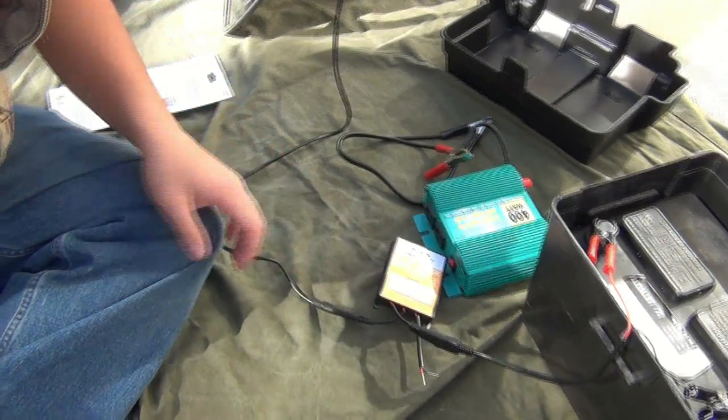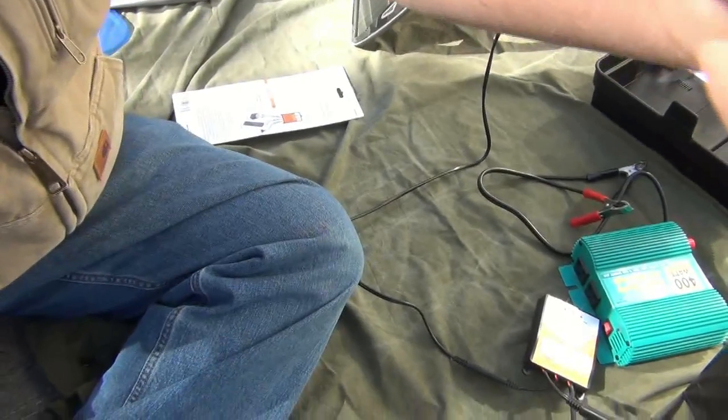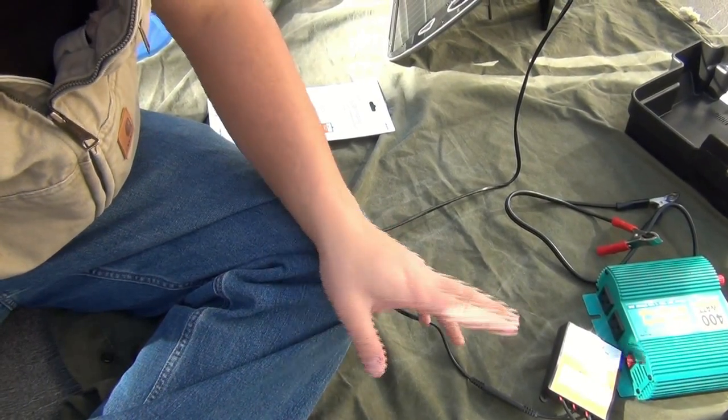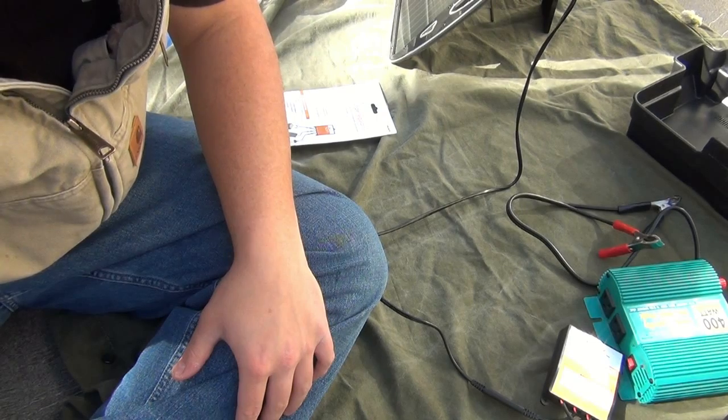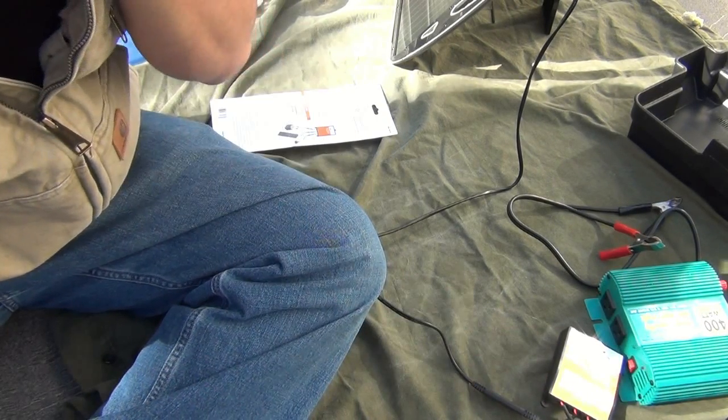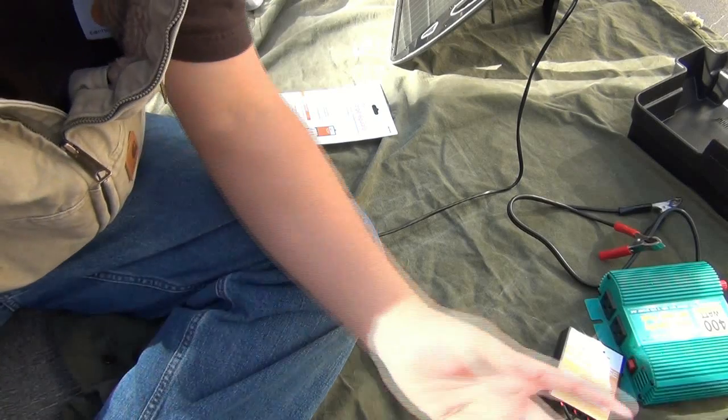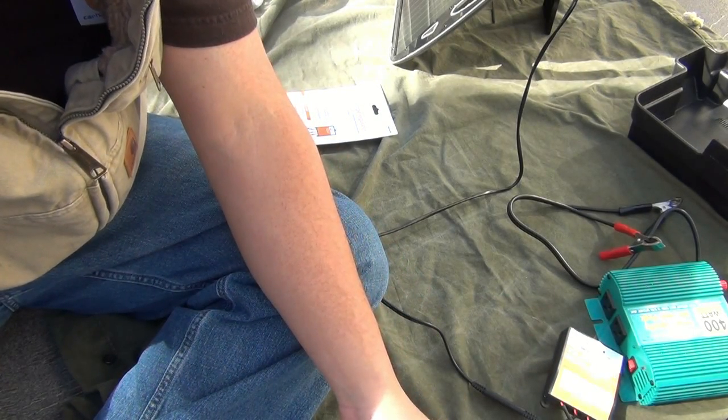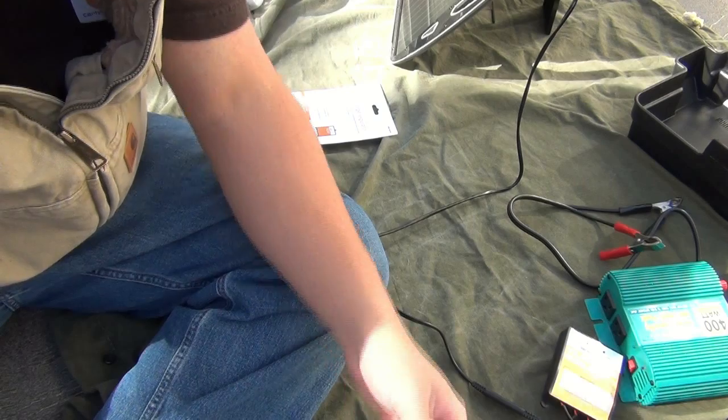That's pretty much it. That solar panel will help slowly charge your 12 volt battery and help maintain the charge that's in it. If you do use this setup for camping, I recommend you charge your 12 volt battery before you go out. That way you know it's ready, it's good to go, and the solar panel will just help maintain the charge on that battery.